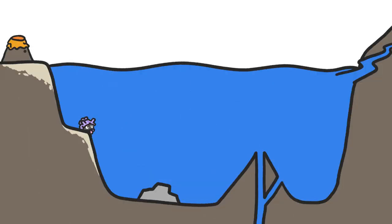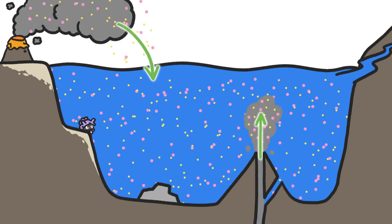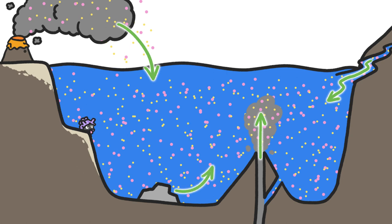But in the ocean, even though ions are constantly being added from volcanic activity above and below the ocean, river discharge, and dissolving seabed sediments, there's not only way more water around to dilute those ions, ions are also constantly getting removed.